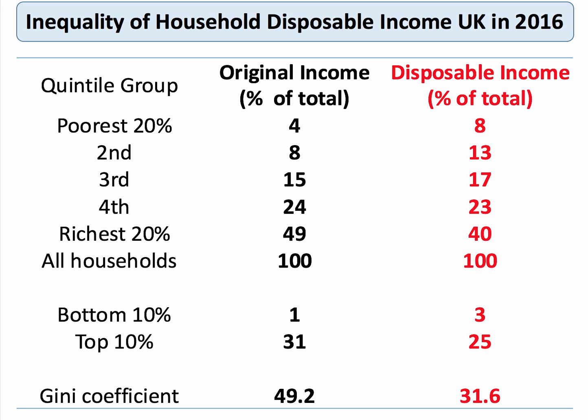That's the way the tax system and welfare benefit system work, in part, to redistribute income. Notice that the Gini coefficient is lower. Progressive taxes and welfare benefit systems help to reduce the Gini coefficient. For the UK in 2016, the Gini coefficient was about 0.32, or 32 expressed as a number.